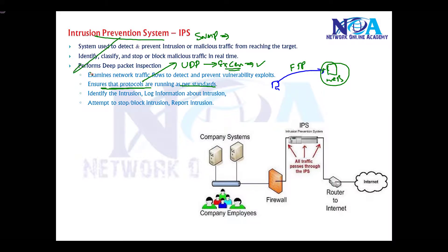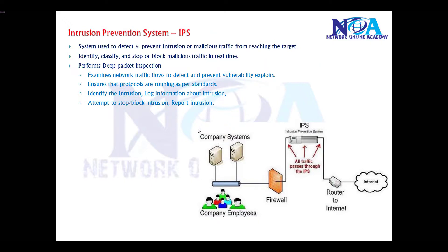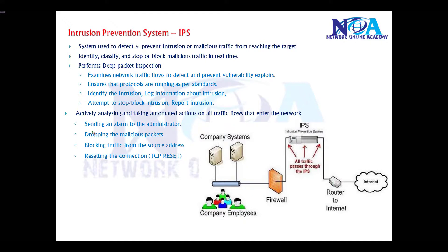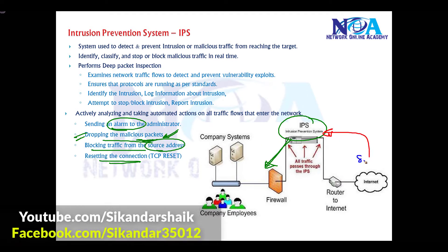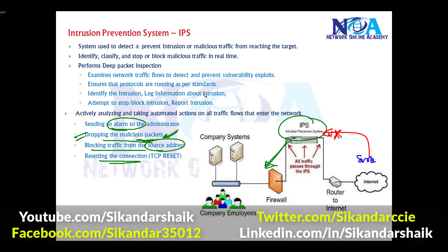The IPS monitors network traffic, detects unusual activity, and can stop particular intrusions since attackers use different methods to introduce attacks. It can report the intrusion, identify it, and log that information. Based on that, the IPS can send an alarm to the administrator or to a firewall, drop malicious traffic in transit, reset connections, or block traffic from a particular source address — for example, blocking or resetting TCP connections initiated by the attacker.